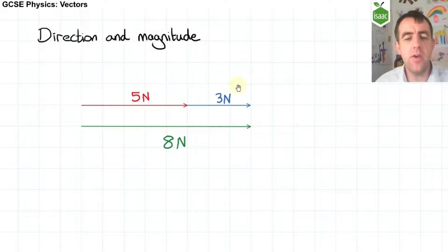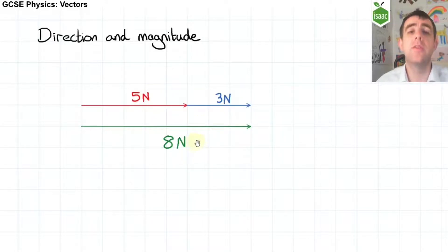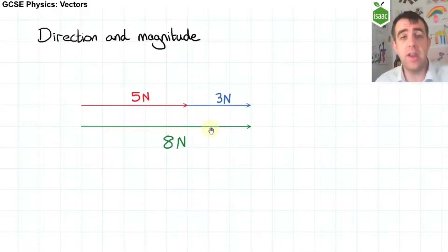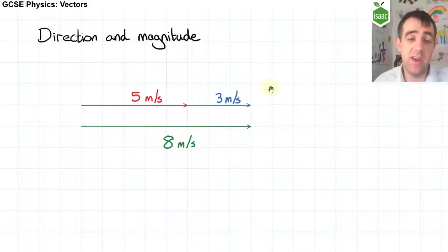The only difference now is that our vectors have units, so they represent physical quantities. In this example, the vectors are forces, and here the vectors are velocities.